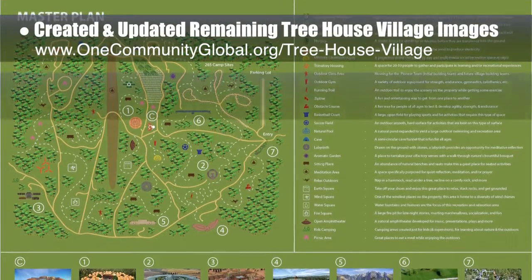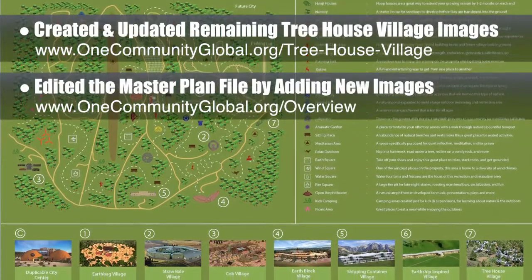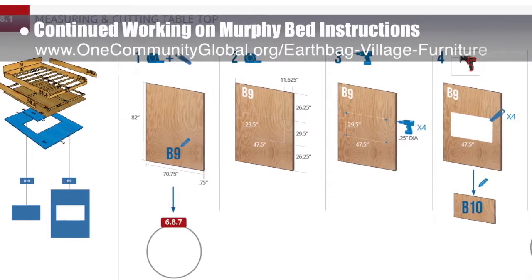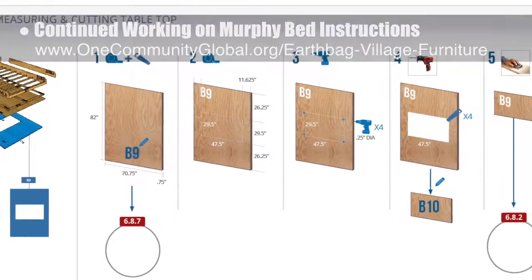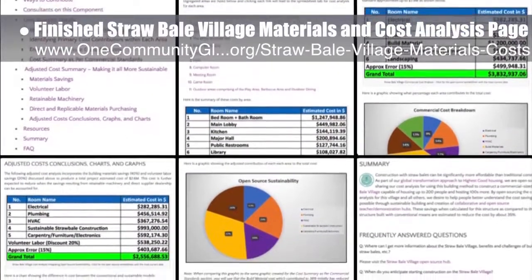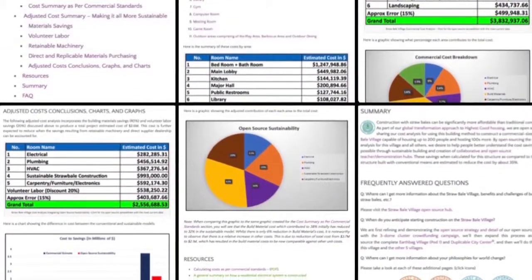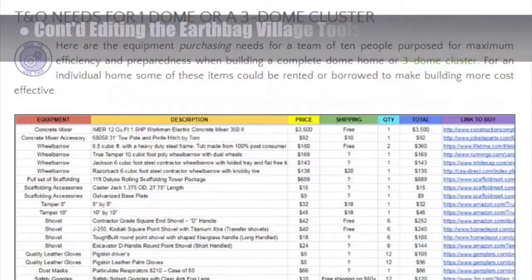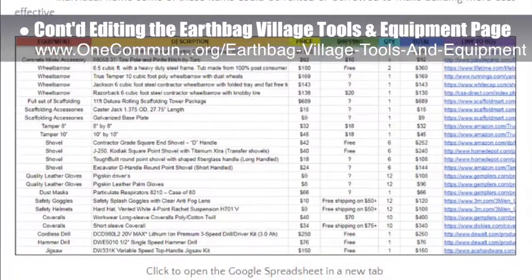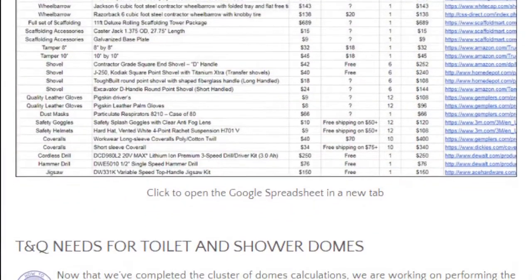The core team edited the master plan file by adding new images and updated it across the site. We continued working on the Murphy Bed instructions, continuing to test different layouts — here is one of the new instructional page examples in progress. The core team also finished the complete straw bale village materials and cost analysis page, and continued editing the earthbag village tools and equipment page, updating the Google spreadsheet and adding new screenshots. We also began creating a new thermal lag page to showcase Vamsi Pilar-Gurtha's work on the subject.